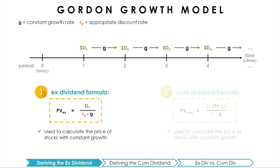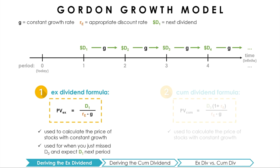In the ex-dividend formula, the numerator D1 is the amount of next period's dividend. Thus, the ex-dividend formula is used to calculate the price of a stock in situations where we, as an investor, just missed a dividend payment and anticipate receiving the next dividend, which is exactly one period from now.